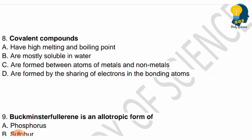Next question: Covalent compounds — which of the following is correct? Options: have high melting and boiling point, are mostly soluble in water, are formed between atoms of metals and non-metals, or are formed by the sharing of electrons between bonding atoms. Read all the options carefully and identify the right one for covalent compounds.